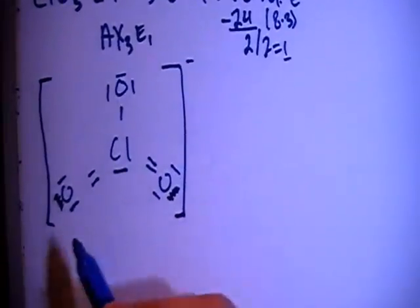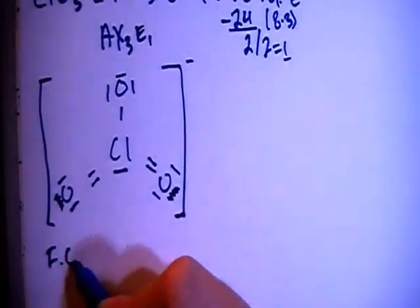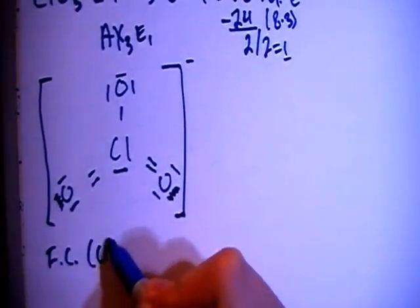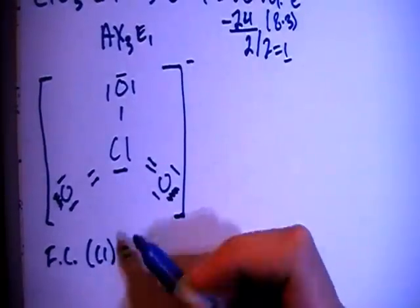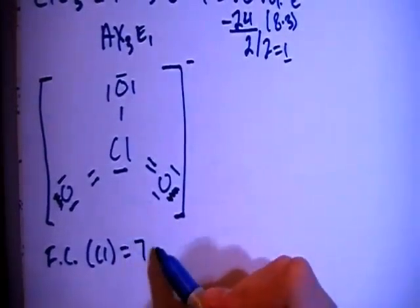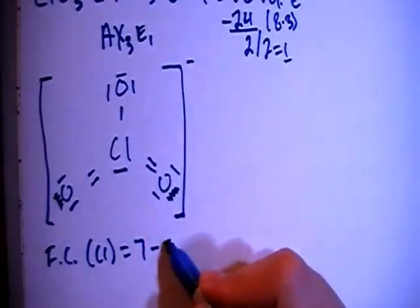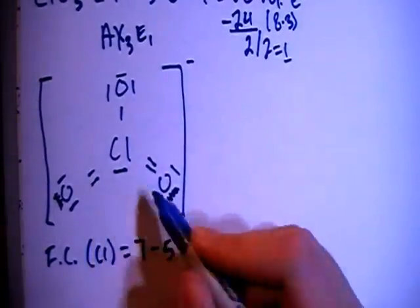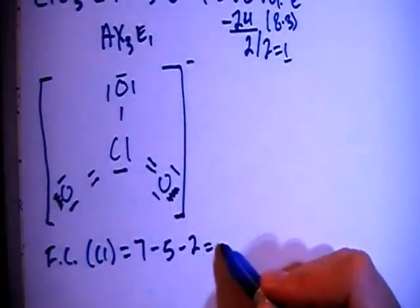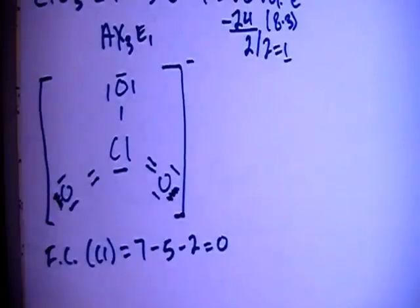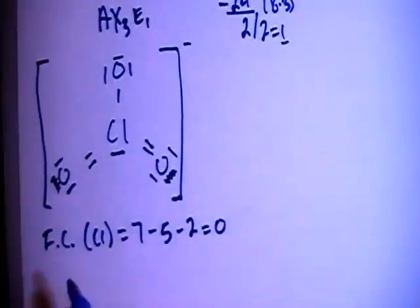So now let's go ahead and check the formal charge. So the formal charge for the chlorine is going to be 7 valence brought in minus 1, 2, 3, 4, 5 bonds minus 1, 2 non-bonding electrons for a formal charge of 0. So 0 is what we're looking for there. You always want to have as close to 0 as possible.